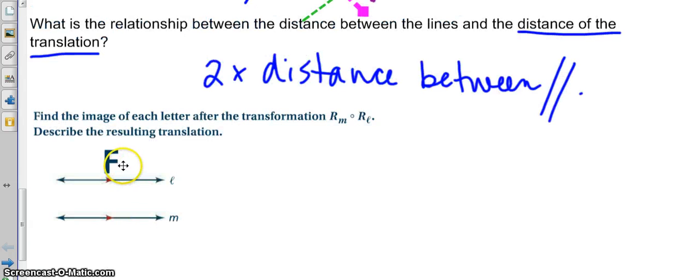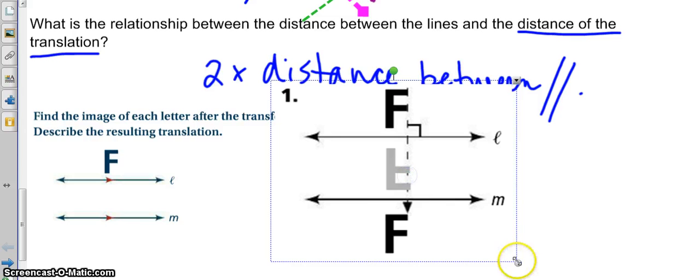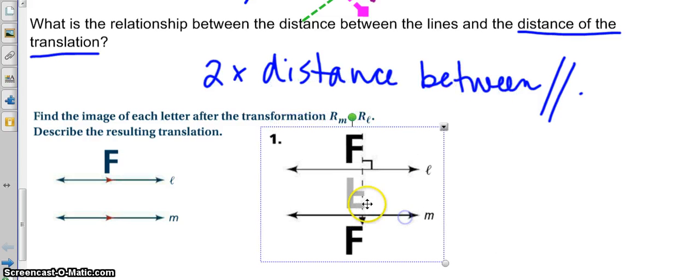So, if we look at the composition of these reflections, we reflect F over the line L, and then we reflect it again over the line M, so we actually end up with this. So, my first reflection would give me this upside down F, and then when I reflect again, I get the same as the resulting image, and the distance between these would be twice the distance between L and M.